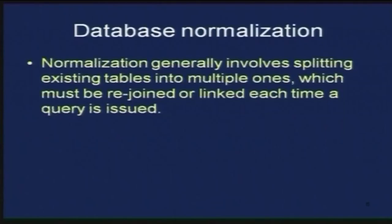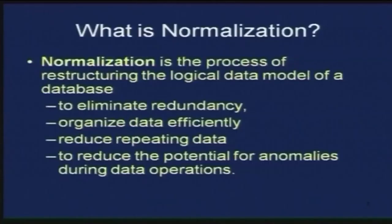Normalization basically involves splitting existing tables into multiple tables and sometimes rejoining or linking them when a query is made. Sometimes, though a relational design is for a single entity, in order to satisfy a normal form, we have to split the tables. If we split a table, the parts must be rejoined or linked together each time a query is asked. Normalization is also the process of restructuring the logical data model of a database to eliminate redundancy.